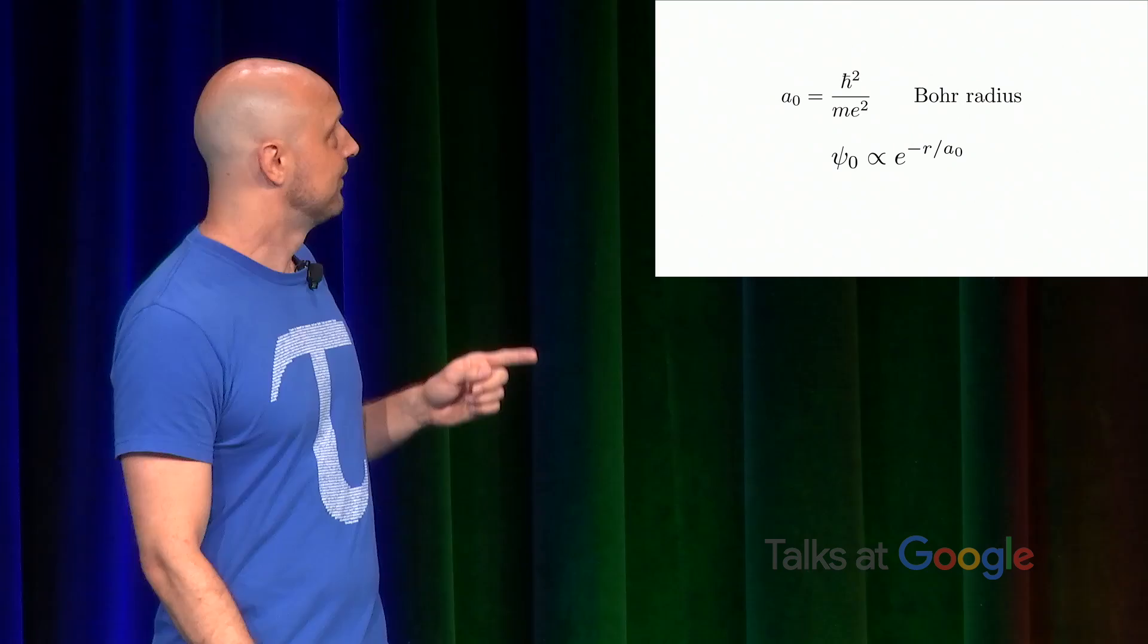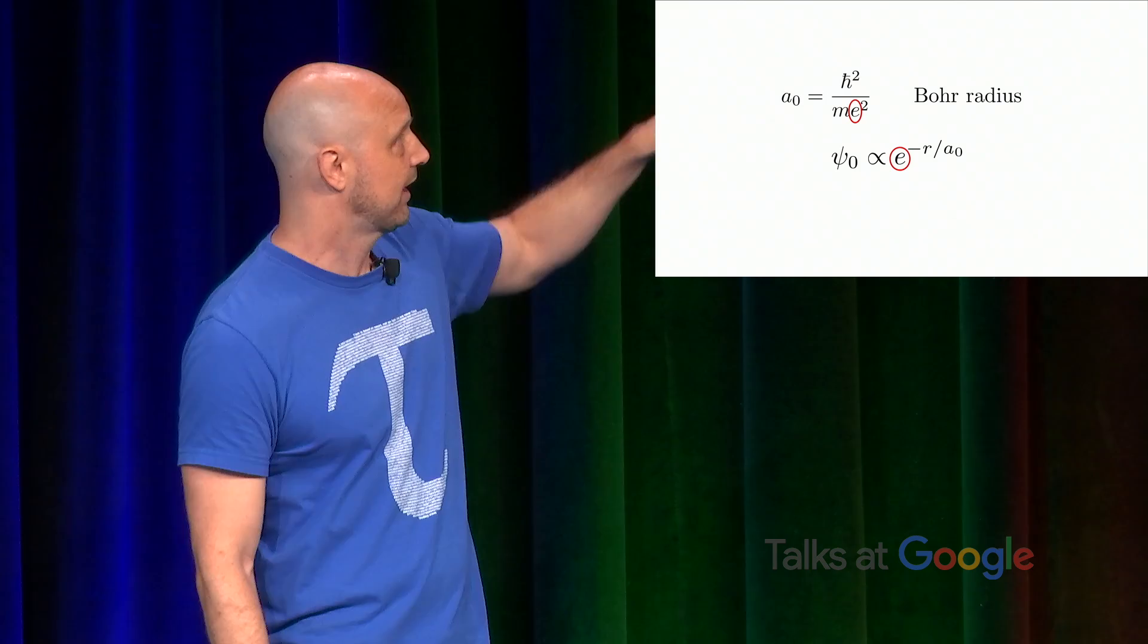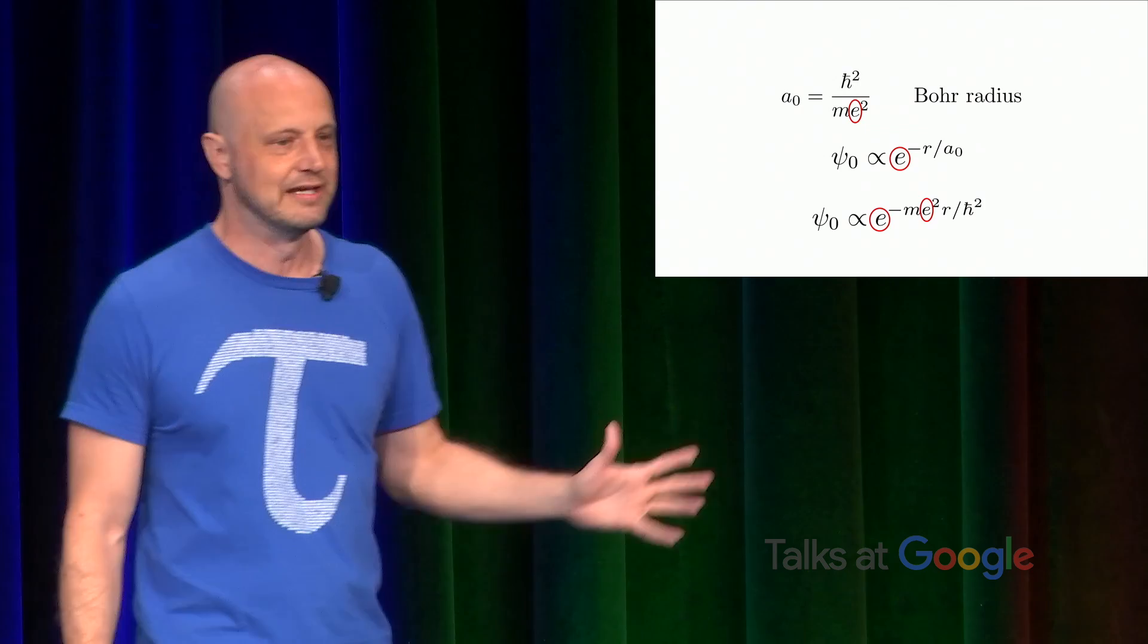This e and this e are not the same e. The first one is the charge on an electron, and the second one is the exponential number, the base of natural logarithms. In fact, if you expand out this a naught, you get e to something with e in it. All right. So I guarantee if you said, oh, let's use e for a mathematical constant, people would say, oh, no, you can't do that because it's already used for the charge on an electron. But in practice, nobody really has any trouble with this.